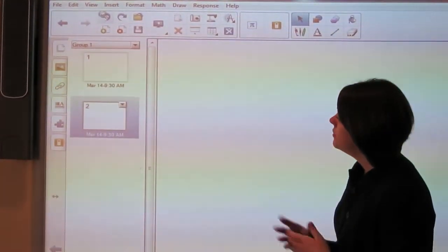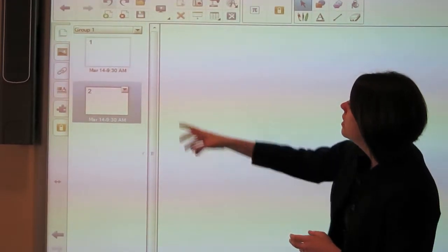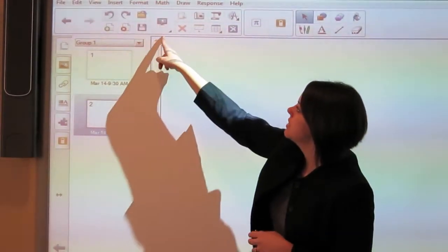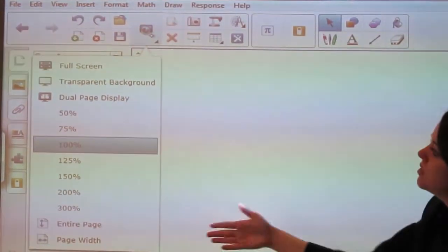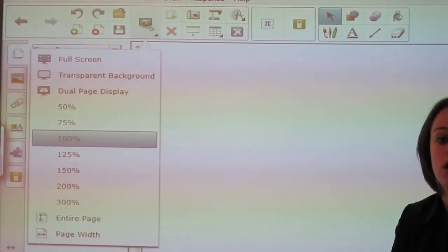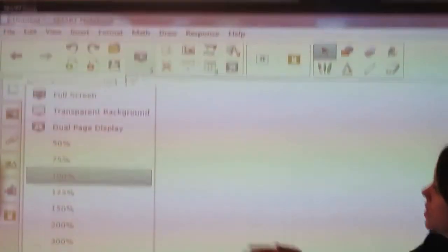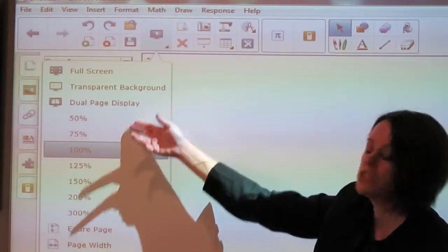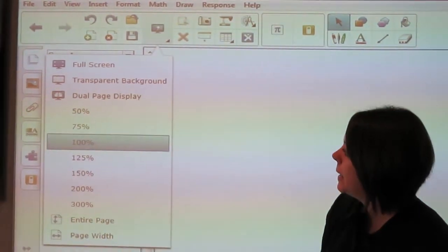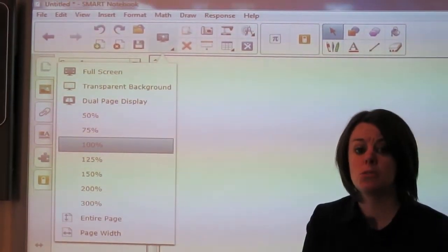A few other basic tools: this one right here that looks like the screen with the magnifying glass—when I click on that, it gives me a drop-down menu of a few other screen options. I can go to full screen, I can do a dual page, and these percentages are different zooms. The most commonly used one out of all those is full screen.